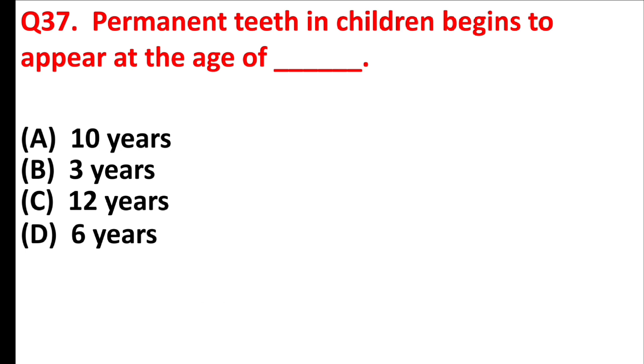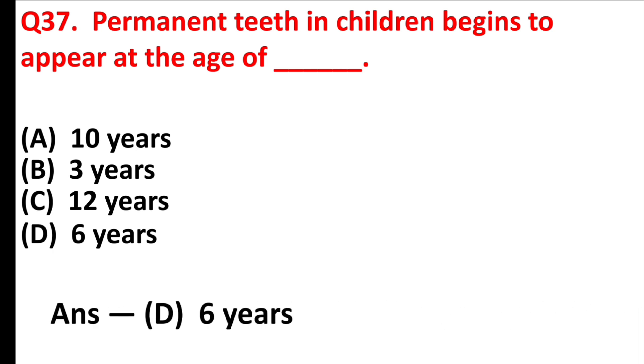Permanent teeth in children begins to appear at the age of blank — Answer is Option D: Six years.